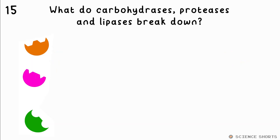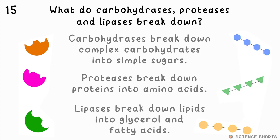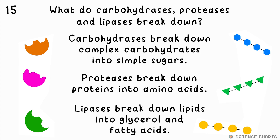What do carbohydrases, proteases and lipases break down and into what? Carbohydrases break down complex carbohydrates into simple sugars — amylase is one of these. Proteases break down proteins into amino acids. Lipases break down lipids — that's fats — into glycerol and fatty acids.